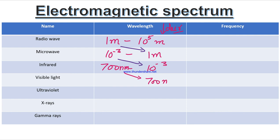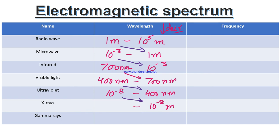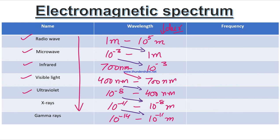Infrared rays range from 700 nanometers down to 10 raised to the power minus 3. Visible light ranges from 400 nanometers to 700 nanometers. So 400 nanometers is written here for visible light, ranging from 10 raised to the power minus 8 upward. As we go further down, values keep decreasing — minus 2 increasing — up to 10 raised to the power minus 11 meters, and further down to 10 raised to the power minus 14 meters for gamma rays. So in this way the wavelength is in decreasing order — matching our mnemonic 'Ram May I Visit U X G.'